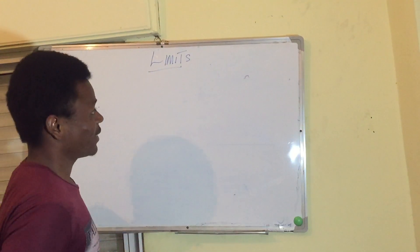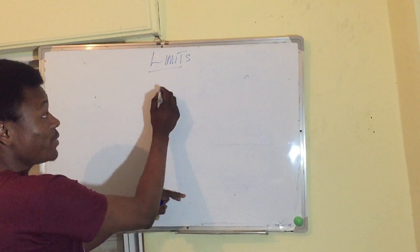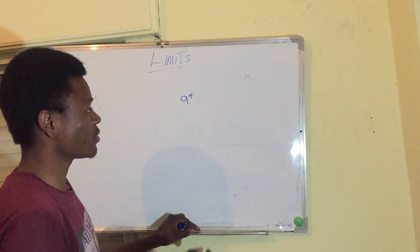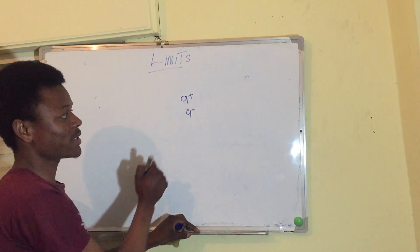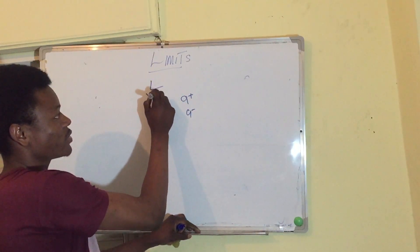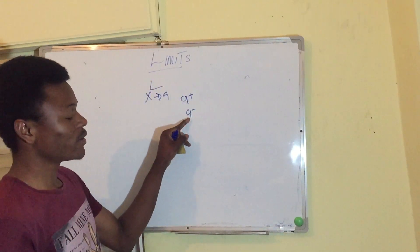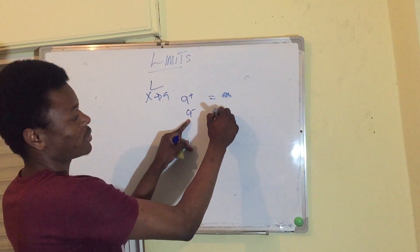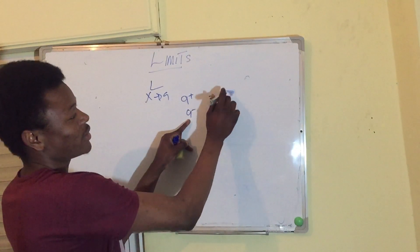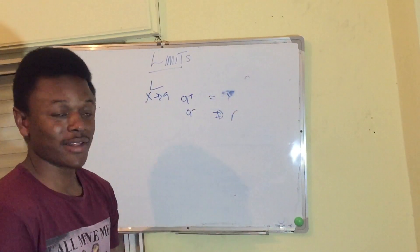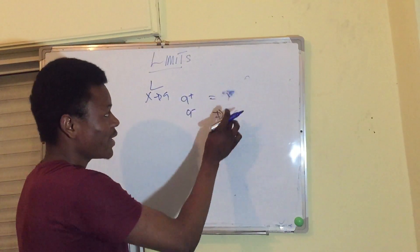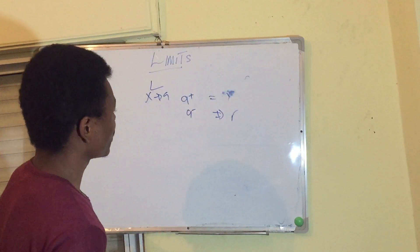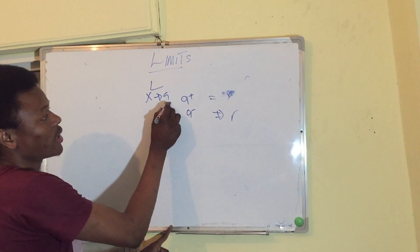For a limit to exist, it must approach the same value from the positive side and from the negative side when x approaches A. Both sides must give the same number — let us call it R. So this limit exists and it is supposed to be that specific number.